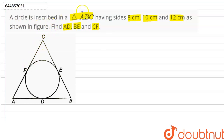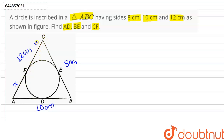So AC is 12cm, AB is 8cm, and BC is 10cm. Now let's say AF is X and CF is Y. We know that AF and AD behave as tangents from the same point, so AD is also X, CF is also Y, and let's say BE is Z, so BD is also Z.